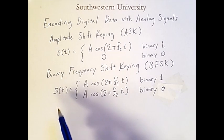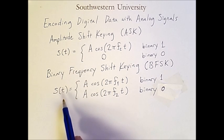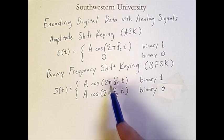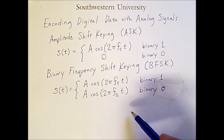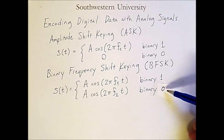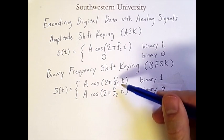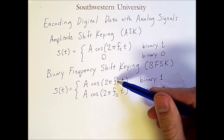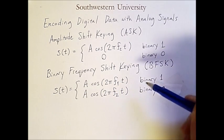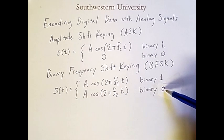This function, like the previous one, encodes the signal as a function of time, and we still have an amplitude, cosine, and 2pi. The only difference between encoding a 1 or a 0 is that the frequencies are different. We have one frequency that we'll use for encoding a binary 1, and a different frequency that we'll use for encoding a binary 0.